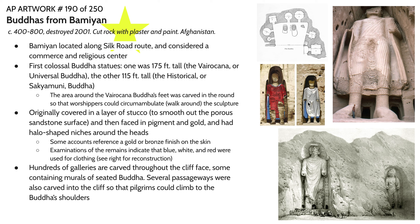This particular statue was originally covered in a layer of stucco — a kind of plaster — to smooth out the porous sandstone surface and make it able to receive painted pigment. There is some evidence that these statues were faced in pigment and in some cases a gold or bronze finish. A couple of reconstructions were made recently showing what these particular colors might have looked like.